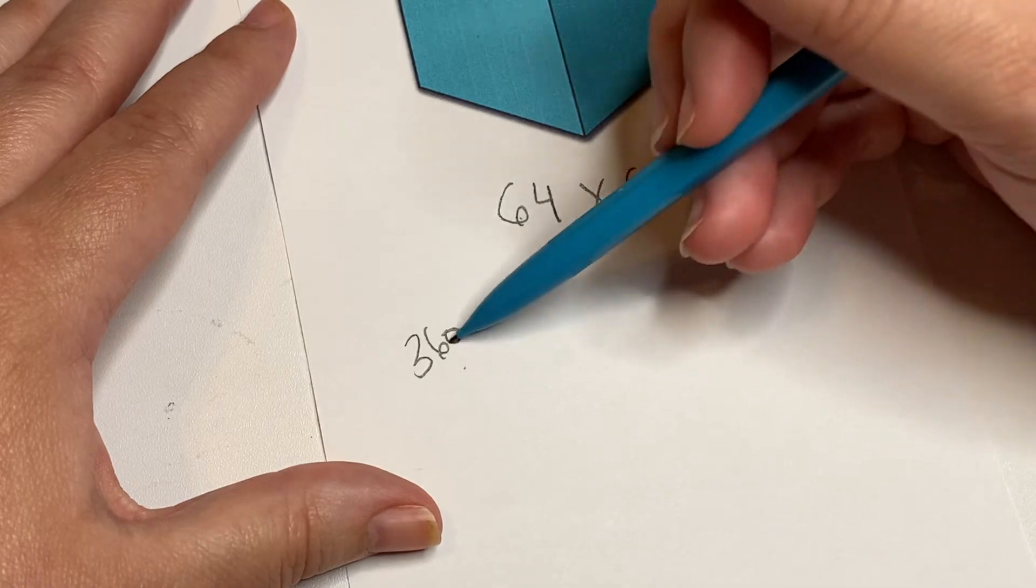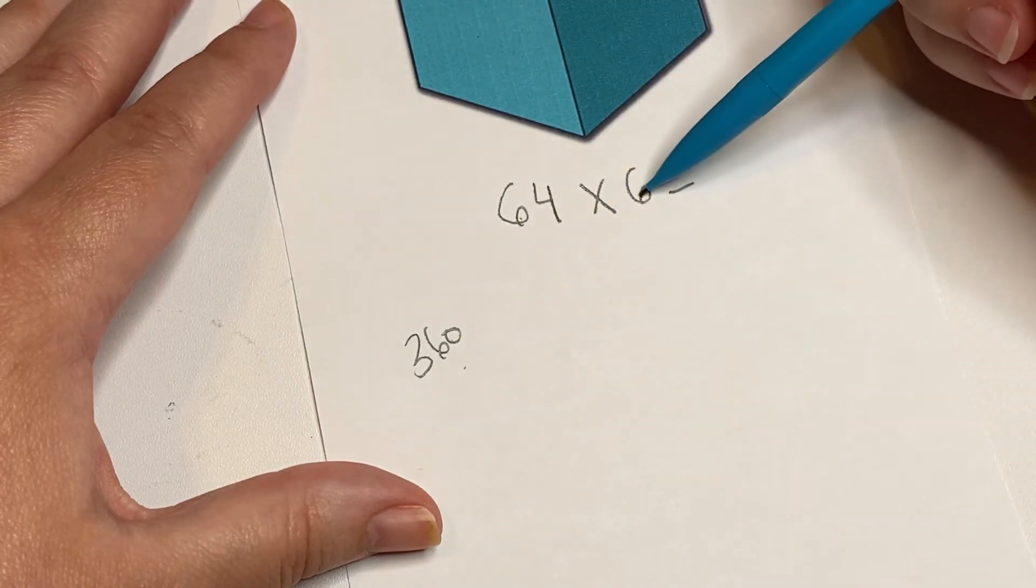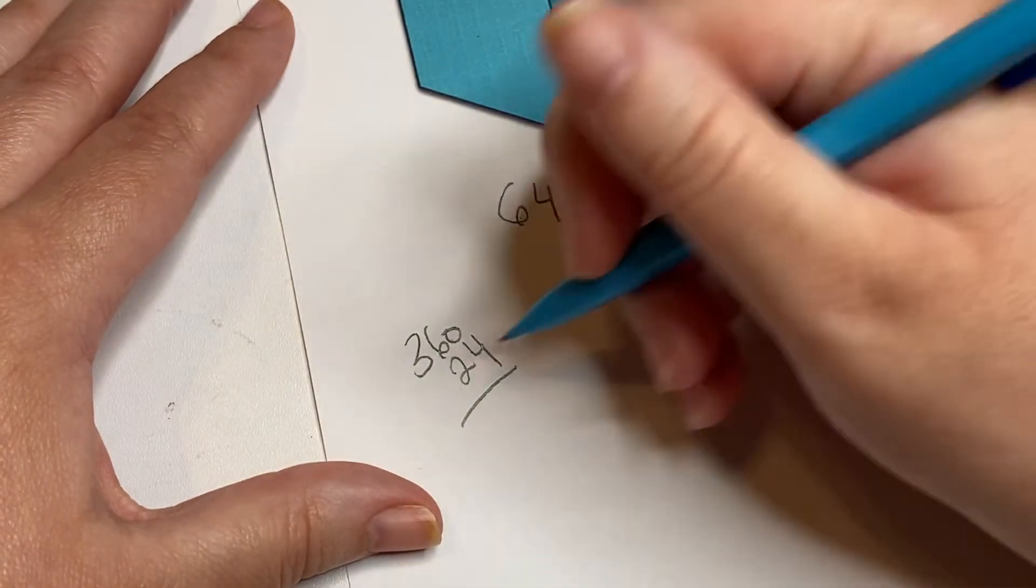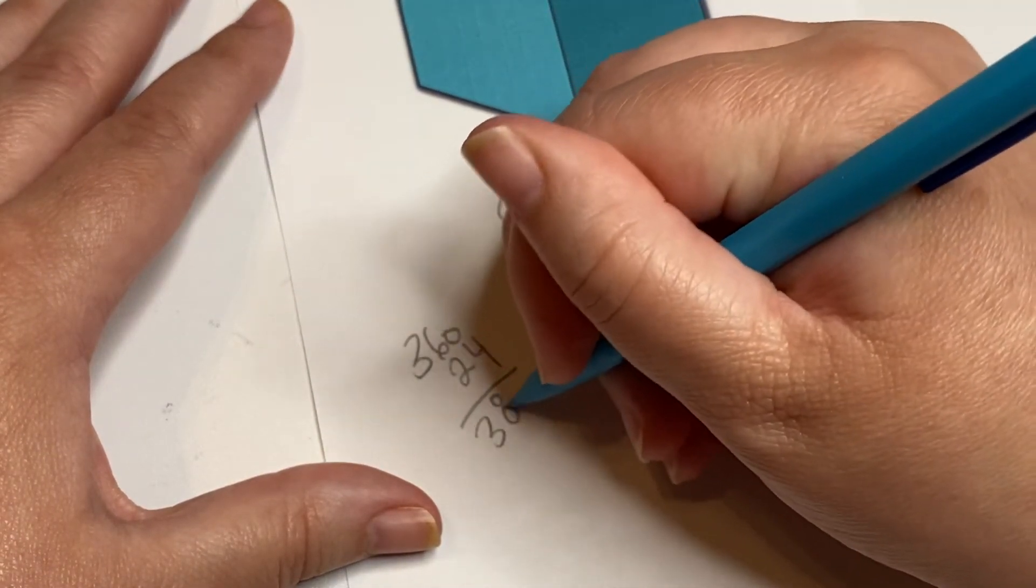And if you can hold that number in your head, or you can write it down, and then I do 6 × 4, which is 24. And then when you add them together you get 384.